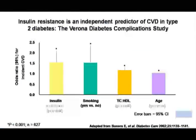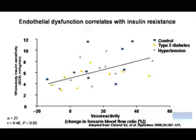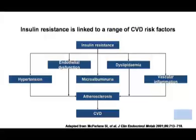Insulin resistance is an independent predictor of cardiovascular disease in type 2 diabetes, and the Verona Diabetes Complication Study has shown that insulin is also a risk factor. Endothelial dysfunction correlates with insulin resistance, and insulin resistance is linked to a range of cardiovascular risk factors — including endothelial dysfunction, dyslipidemia, microalbuminuria, and atherosclerosis — ultimately leading to cardiovascular disease.